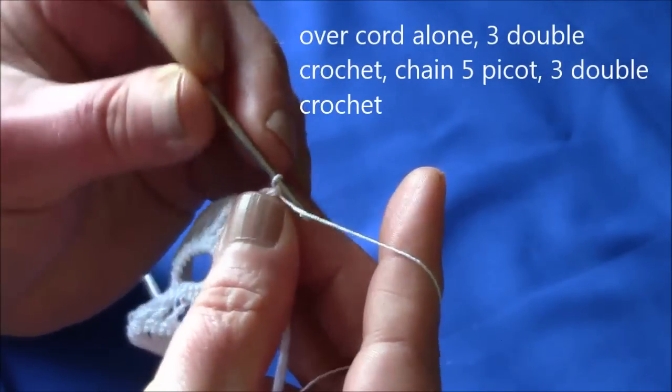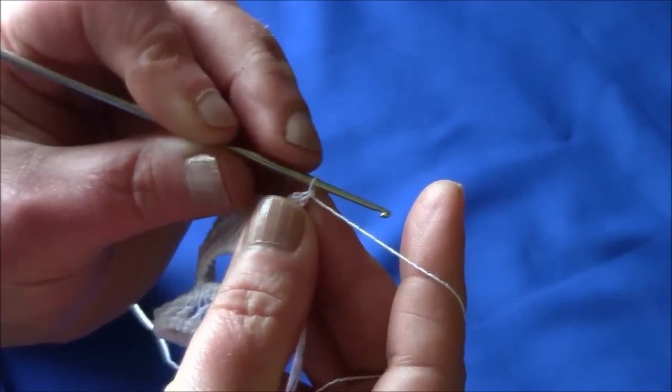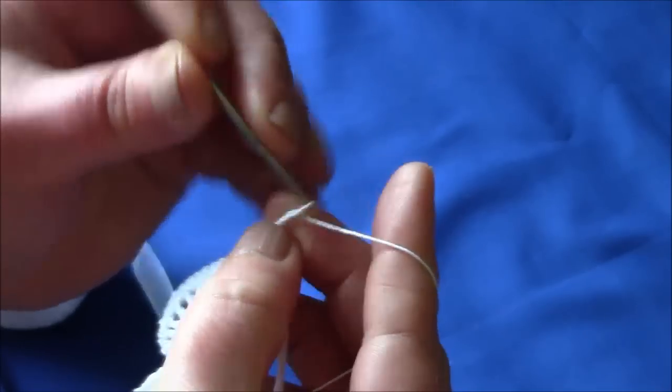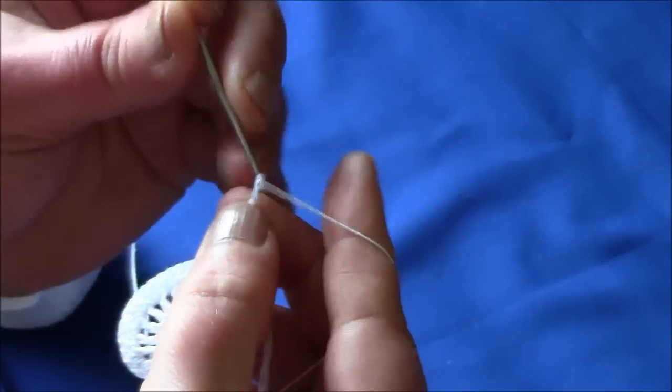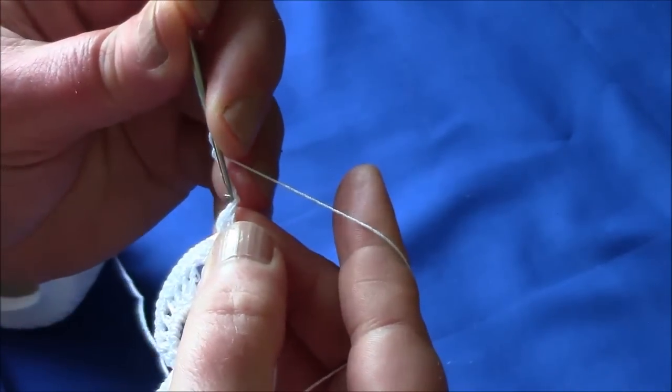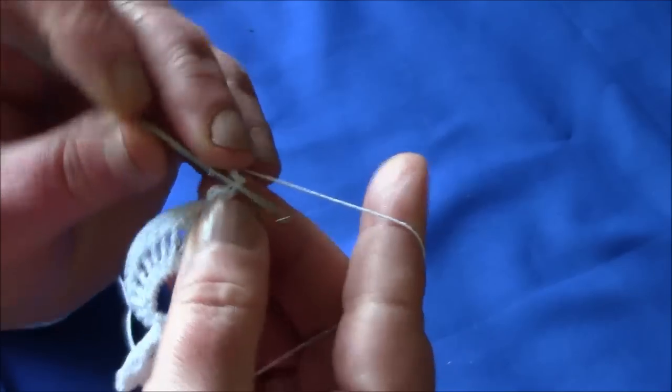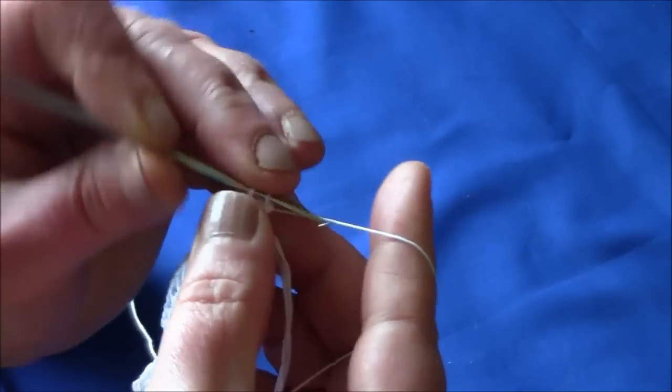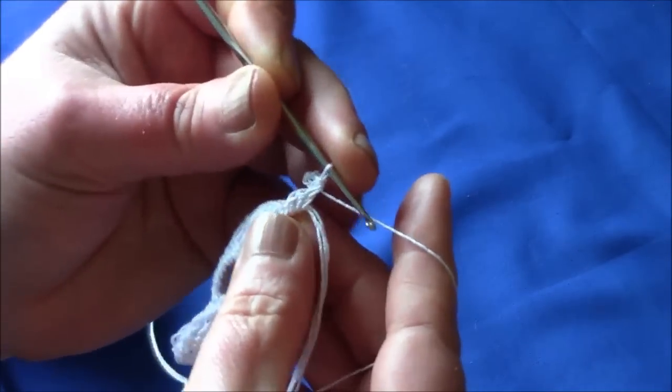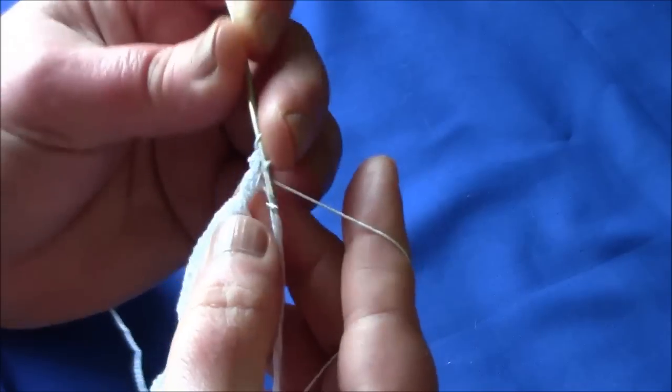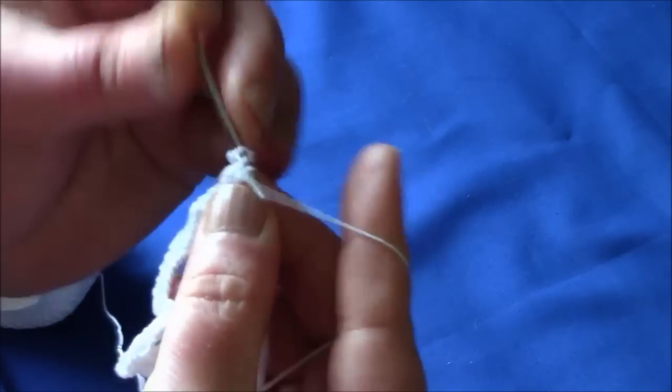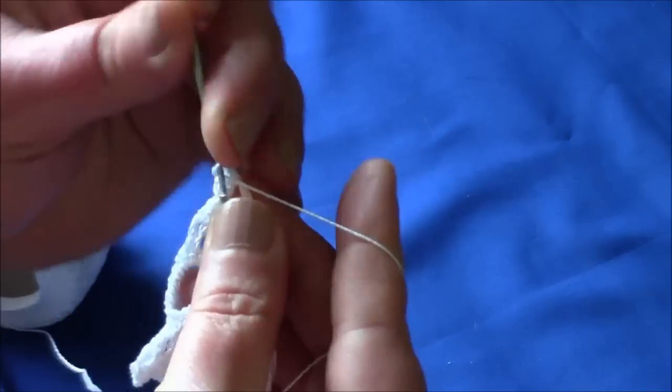Now we're going to make a picot. Chain five, two, three, four, five and make a slip stitch at the base of the chain, there we go. And now make three more double crochet over cord alone.